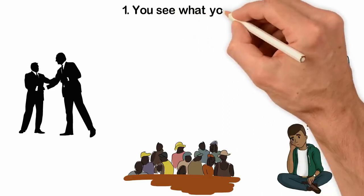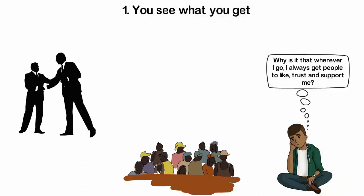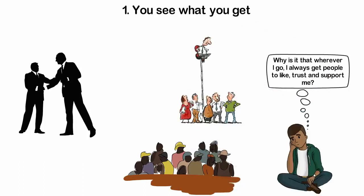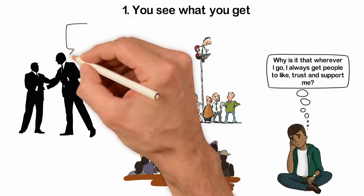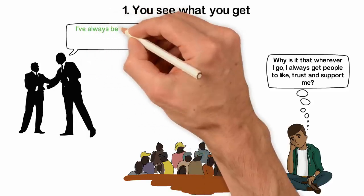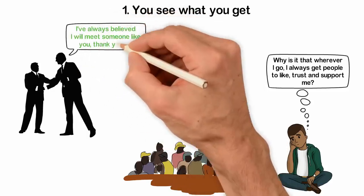This is what I found out. First, you see what you get. By this I mean, if you think everyone is evil, you'll meet enough evil people. If you think people are generally nice and supportive, you'll meet nice, supportive and good people. Maybe the law of attraction plays a game here. I cannot tell.